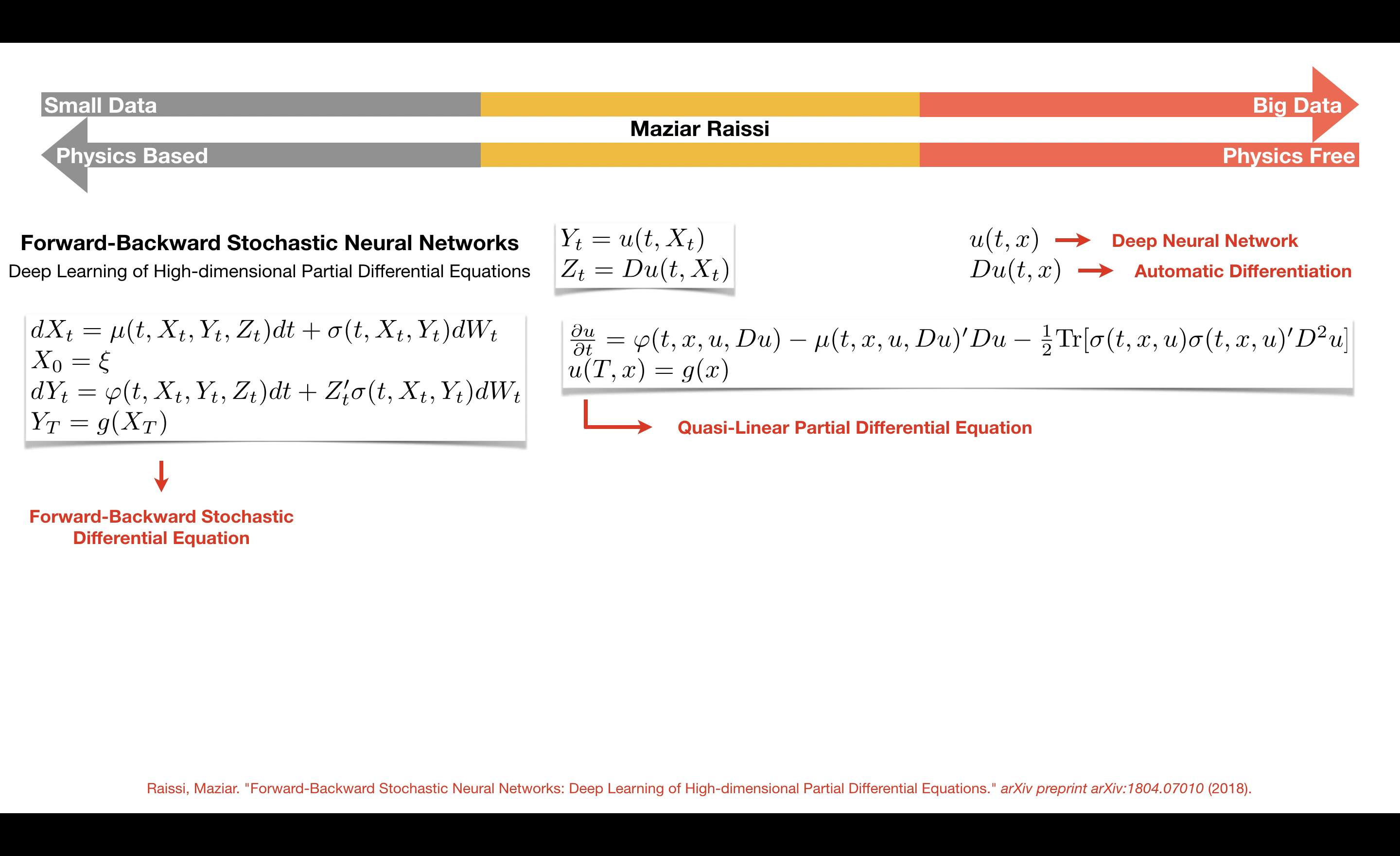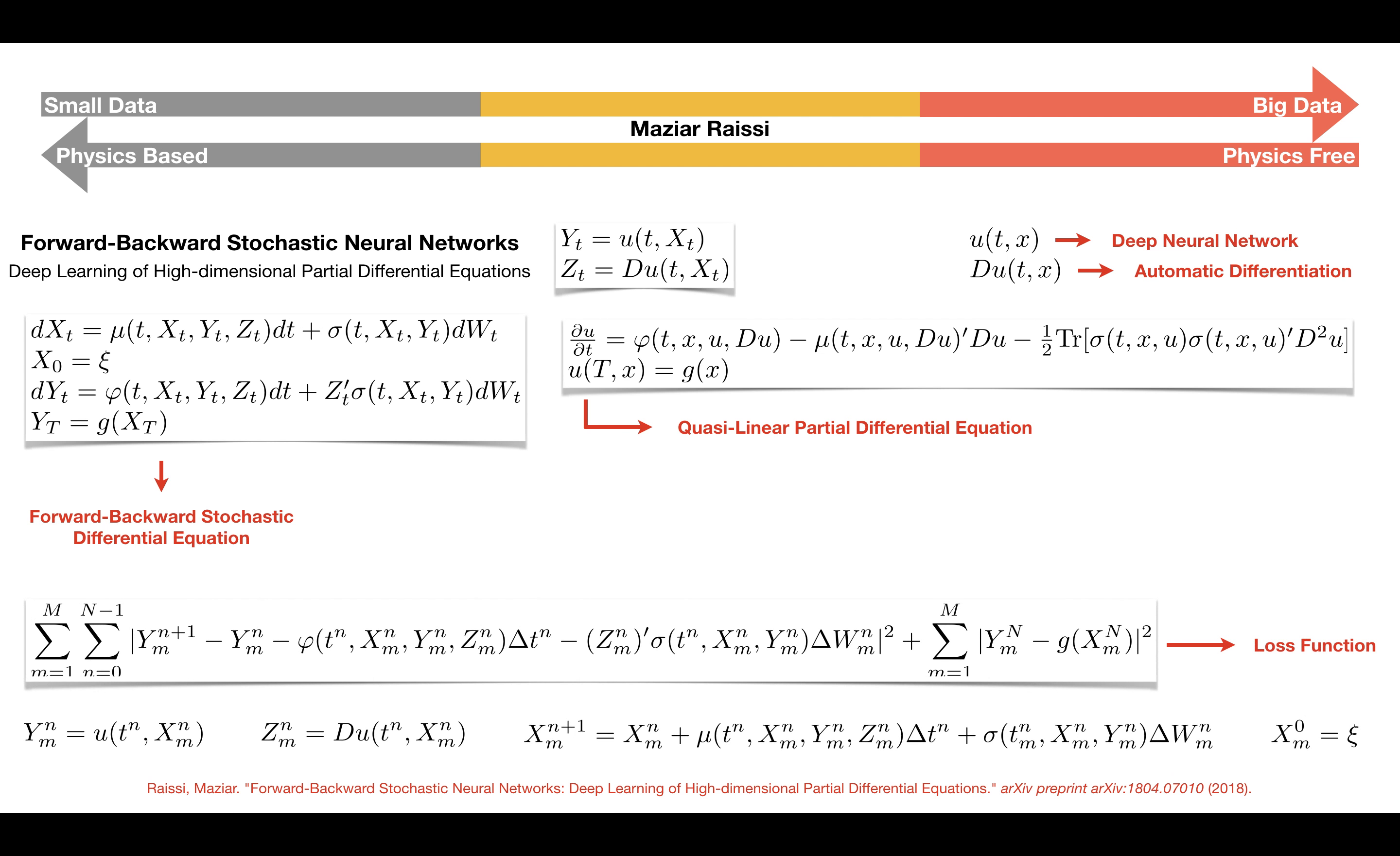Parameters of the neural network u can be learned by minimizing the following loss function. This loss function is obtained from discretizing the forward-backward stochastic differential equation using a standard Euler-Maruyama scheme.